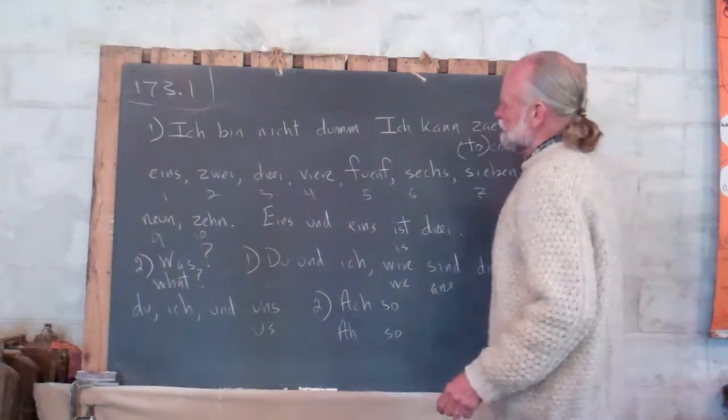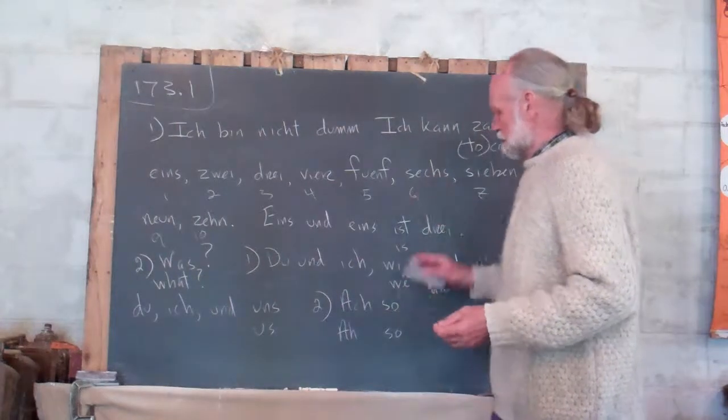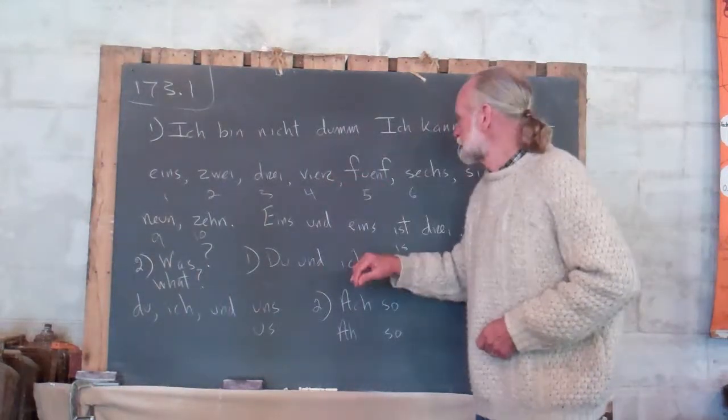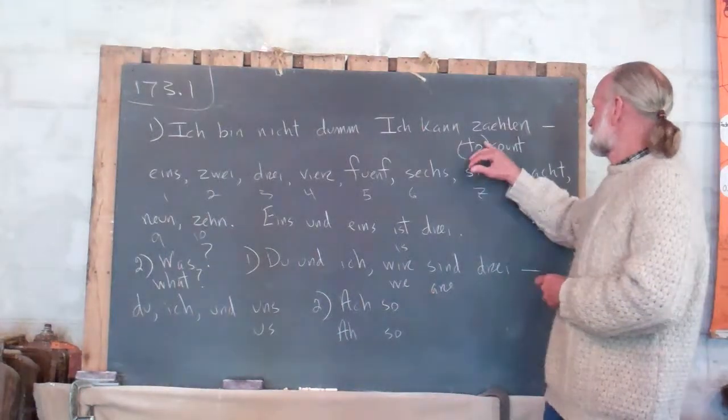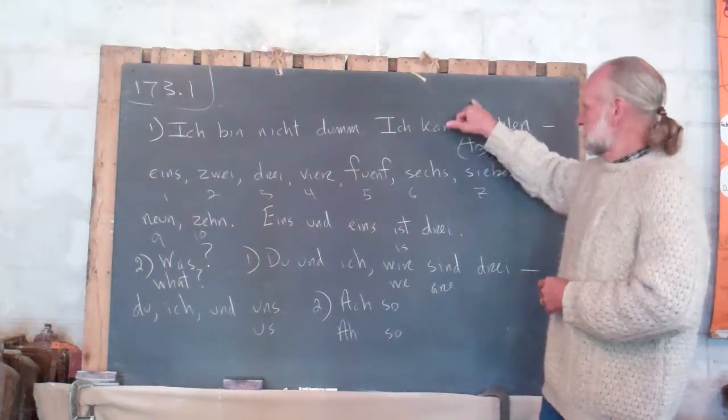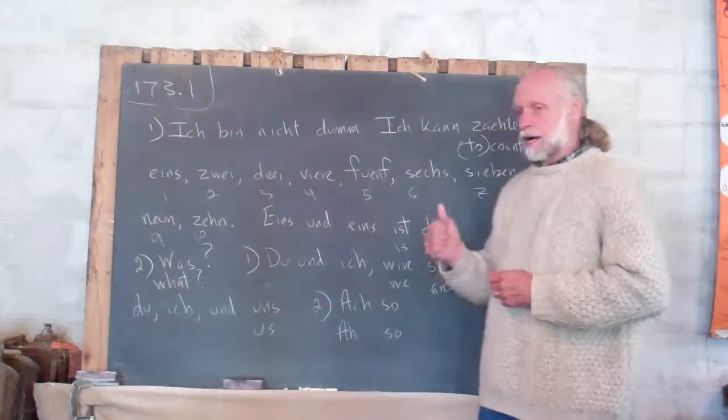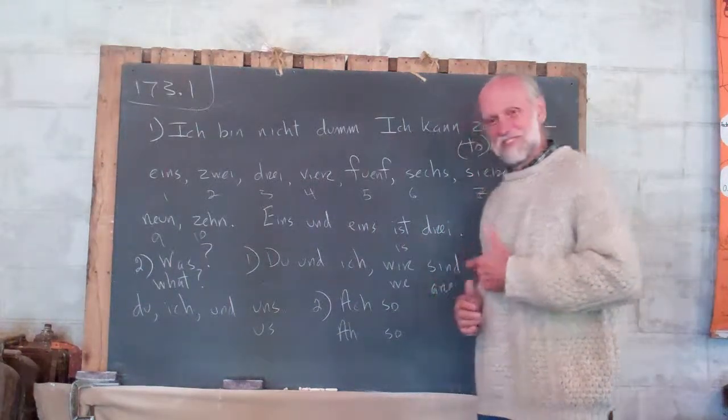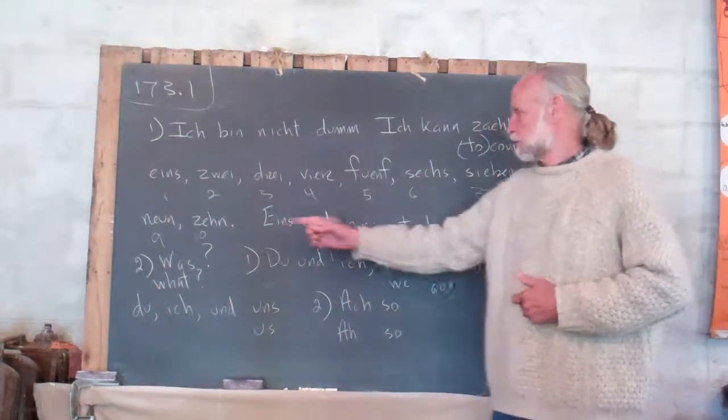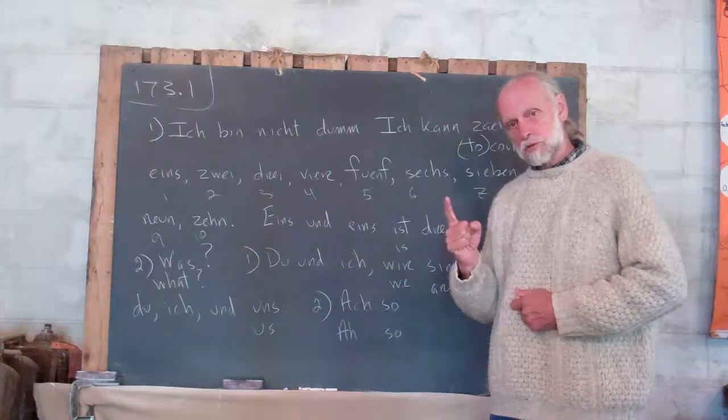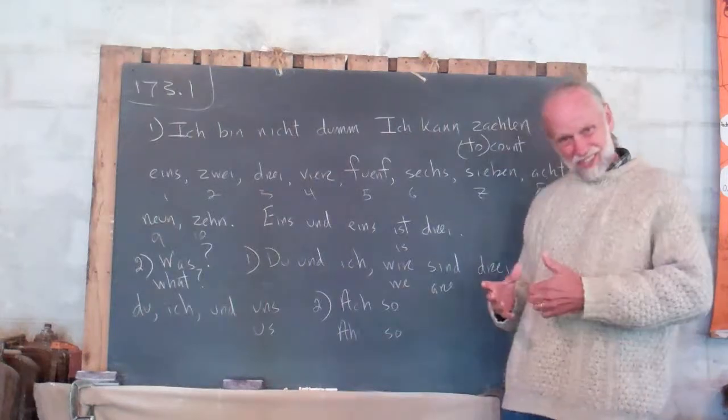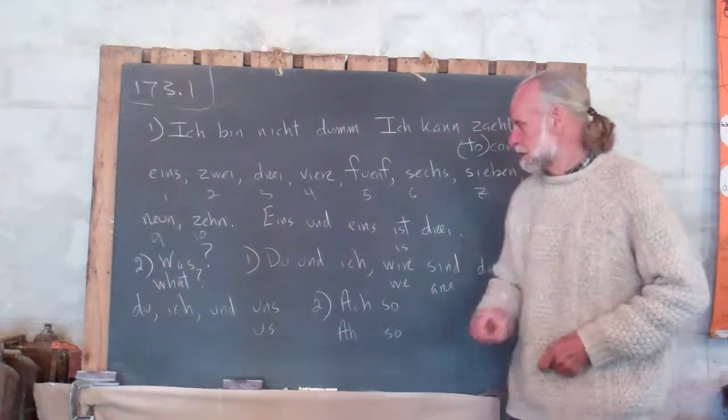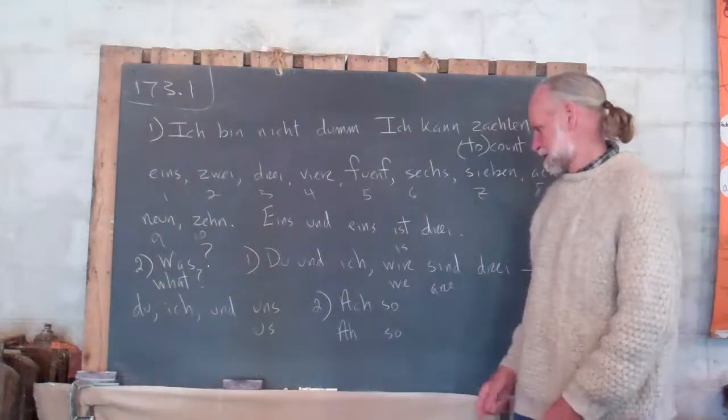All right, now I said about fü, that sound right there. Let me, I'll read this one more time then I'll erase it. Ich bin nicht dumm. And you should say that. Ich kann zählen. There's that TS. Eins, zwei, drei, vier, fünf, sechs, sieben, acht, neun, zehn. Eins und eins ist drei. Was? Du und ich, wir sind drei. Du, ich und uns. Ach so.